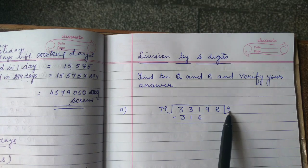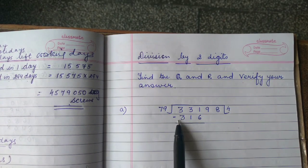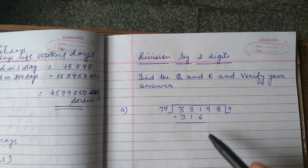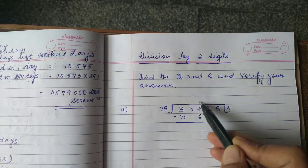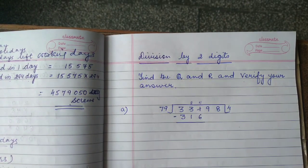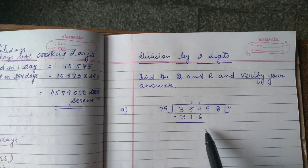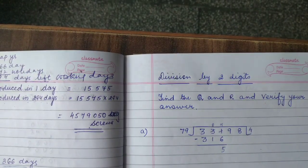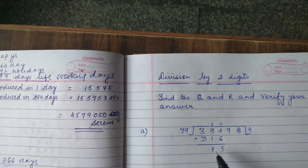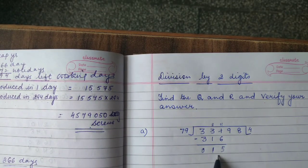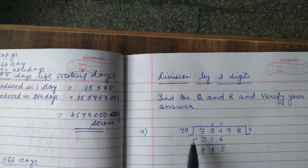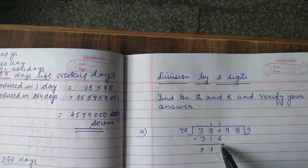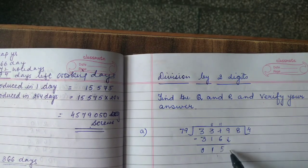When we multiply 79 by 4, we get 316. Now subtract it. 11 minus 6 is 5, and 2 minus 1 is 1, giving us 0. So we have 15, which is less than 79, so we cannot divide.